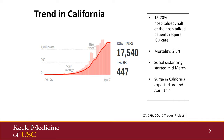California has 17,000 cases with a mortality of 2.5 to 3% and a positivity rate of 11%. About 15 to 20% of identified cases require hospitalization, and of those, half have required ICU care. Social distancing started mid-March. Initially, the surge was expected around April 26, but based on mathematical modeling, it is now reported to be around April 14, though that's based on assumptions.